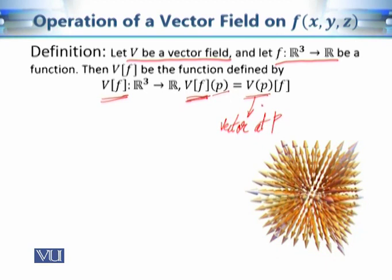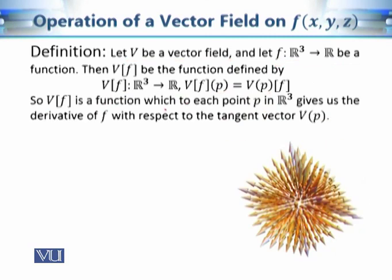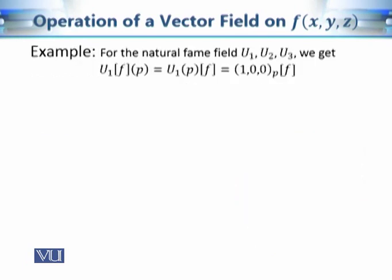The vector field at point p has a point of application p — where we want to calculate the derivative — and a vector part which gives the direction in which we compute the directional derivative. So this operation V(f) is a function from R³ to R that gives the directional derivative at each and every point. For each point of R³ it yields the derivative of f with respect to the tangent vector V(p), so the vector field serves as providing the direction at each point.